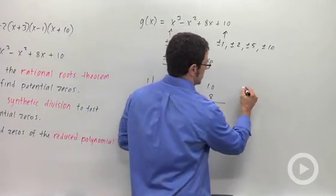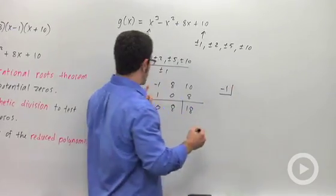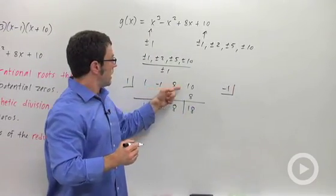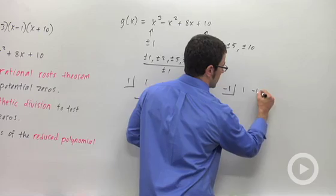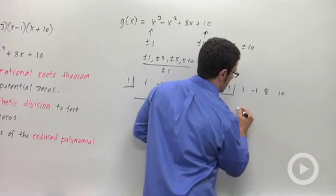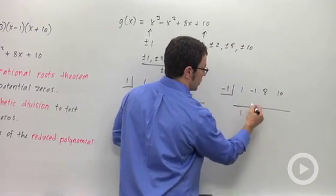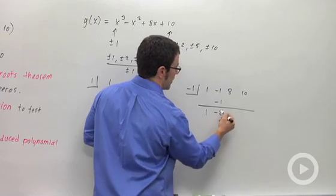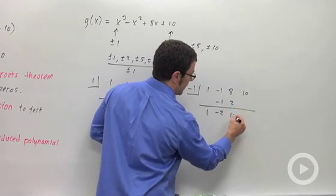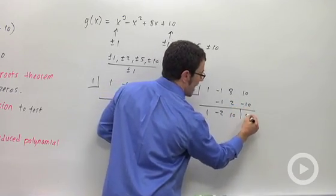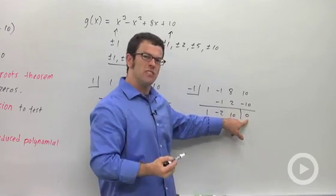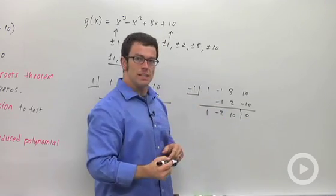Same coefficients: 1, negative 1, 8, 10. And same process. Bring the 1 down, multiply, add and multiply, add and multiply. And that works. Right? The remainder is 0. And that means that negative 1 is a zero.